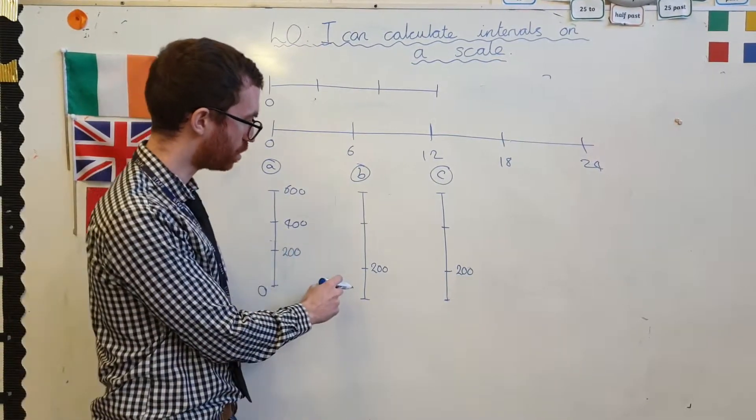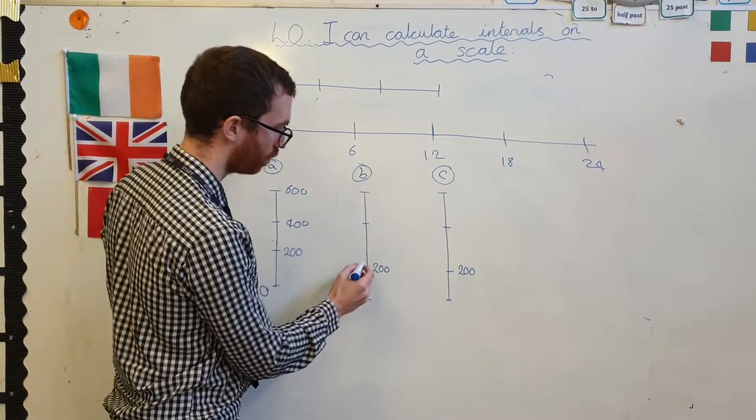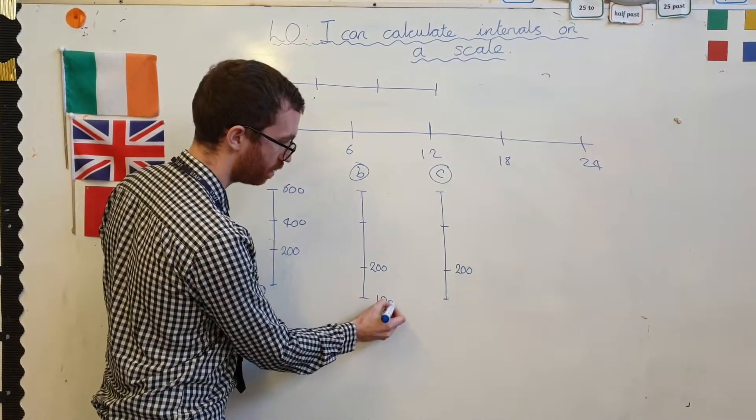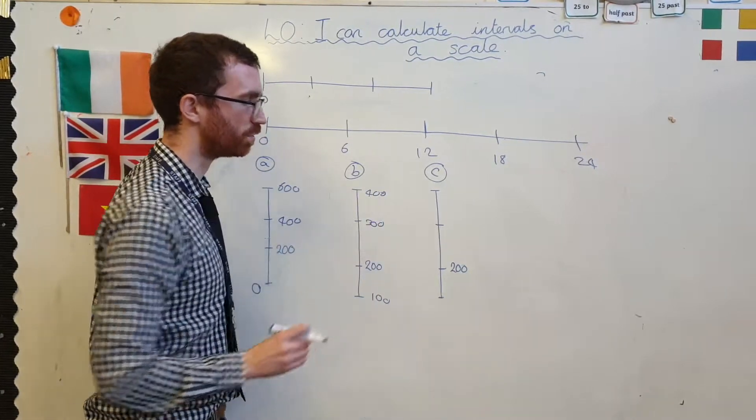How about I make each of the jumps, that was 200, I'll make each of the jumps 100. So 100 there, 200, 300, 400. Oh, nice.